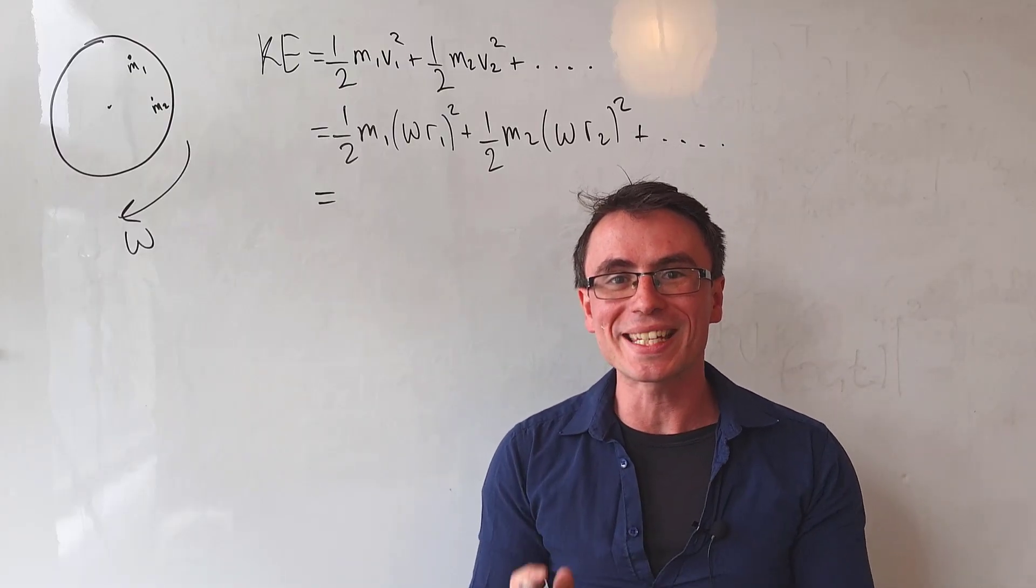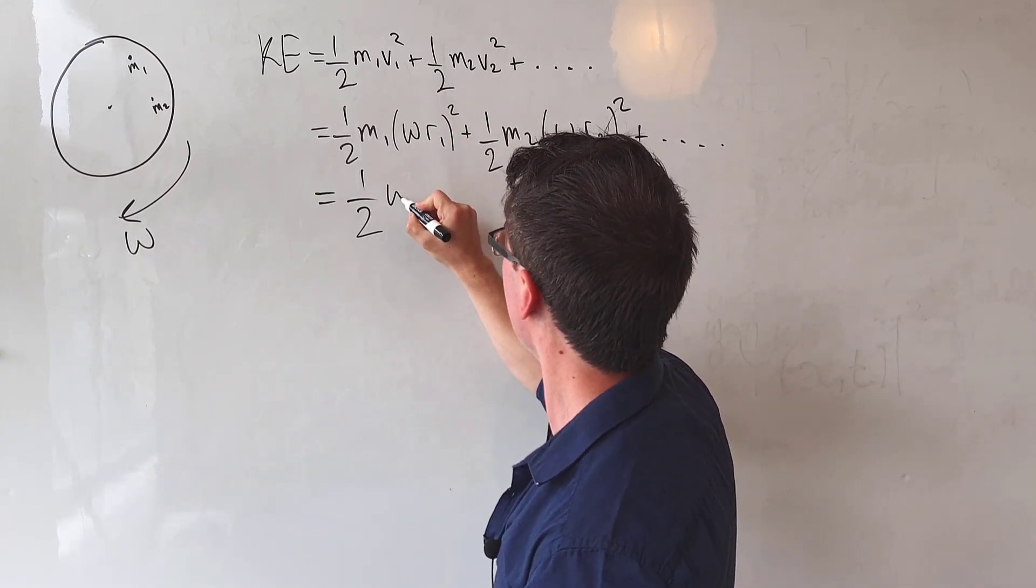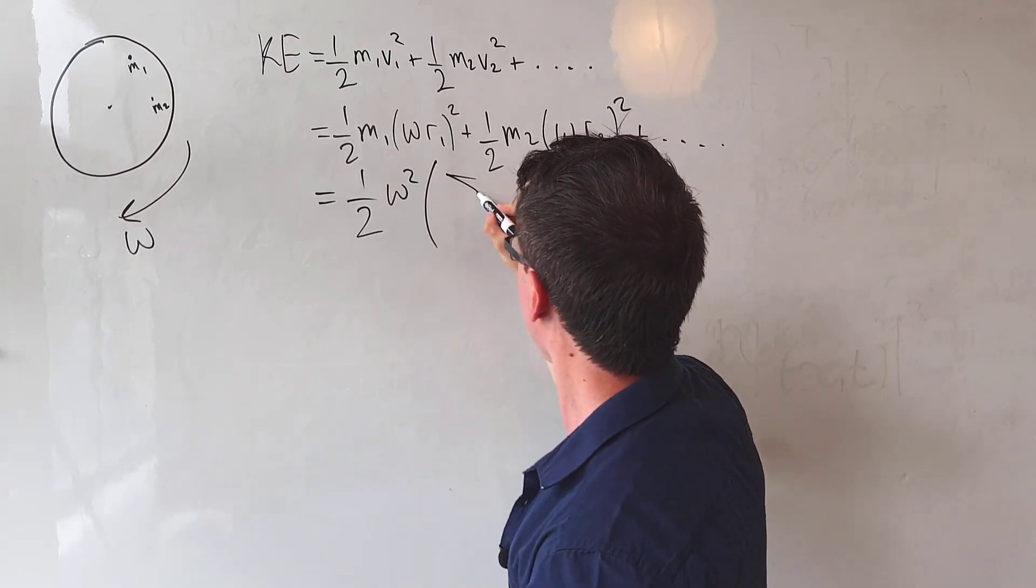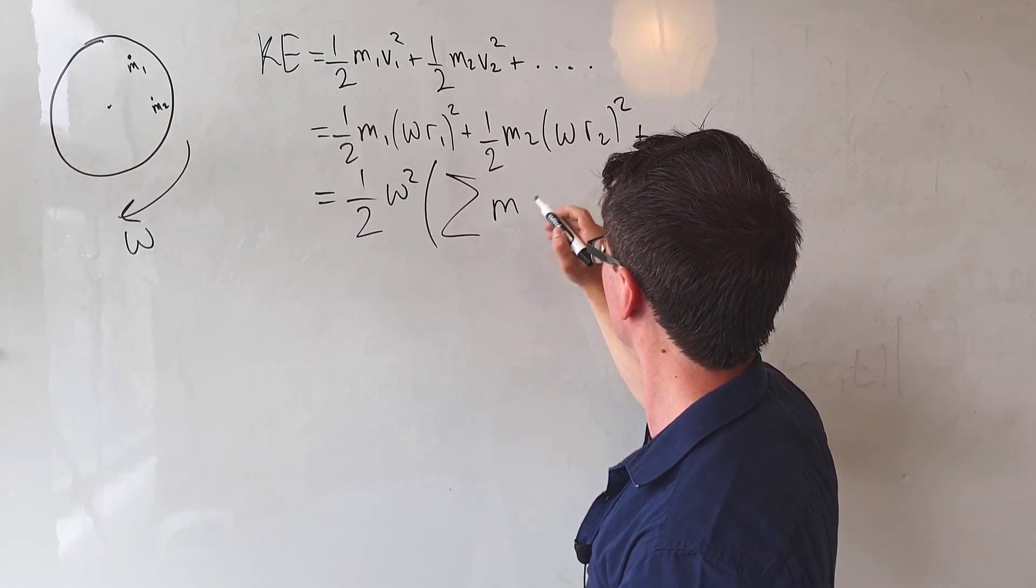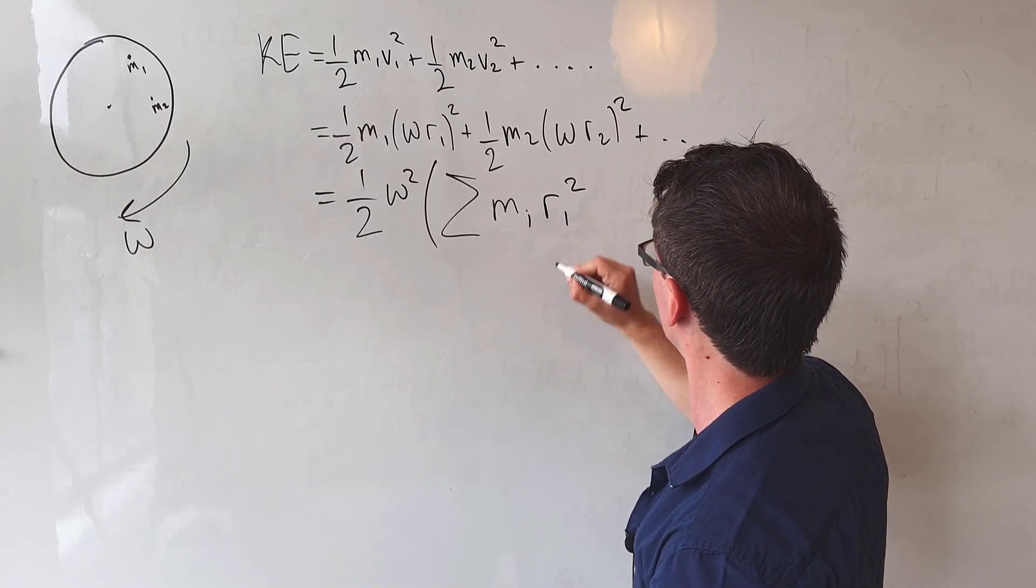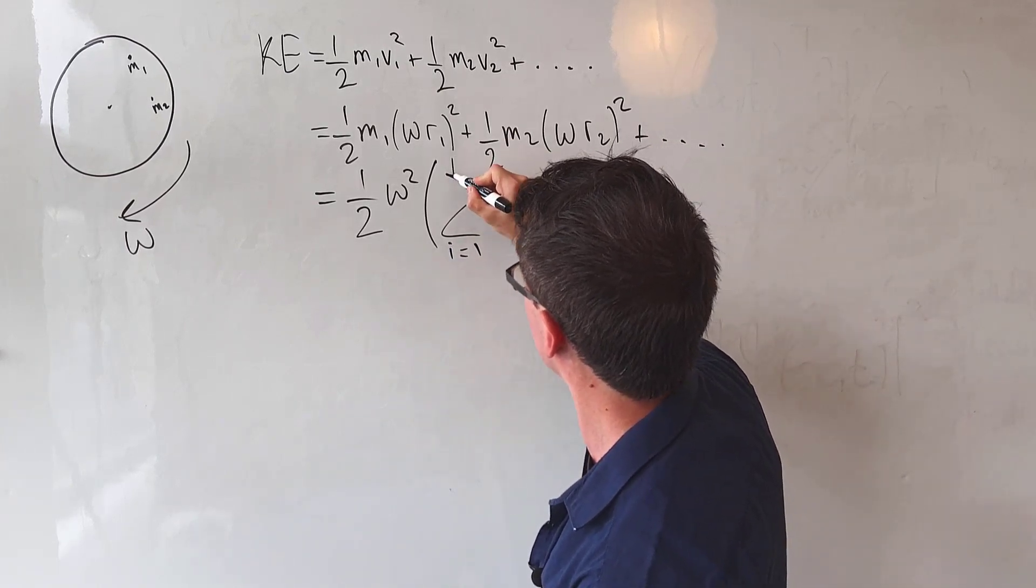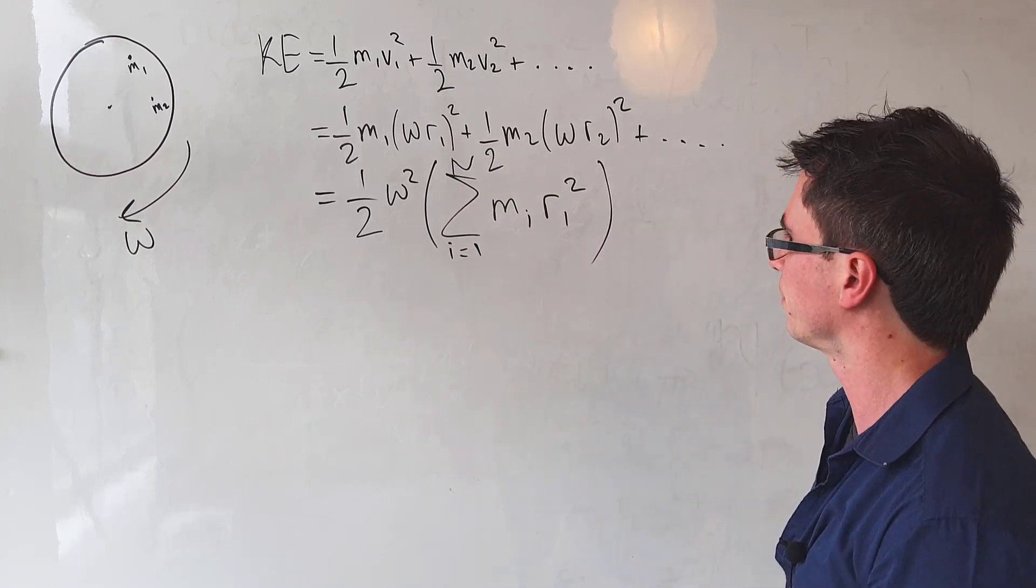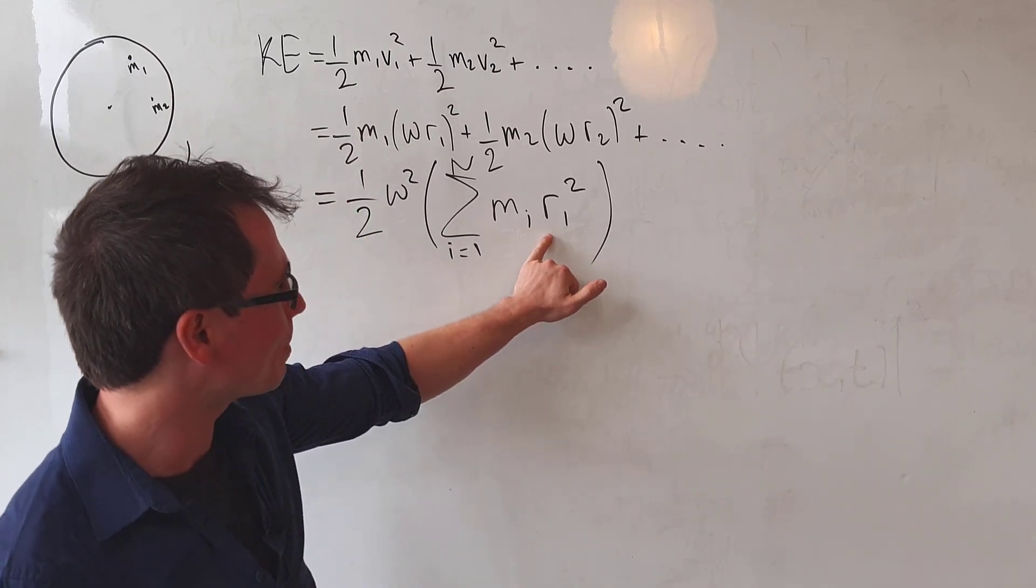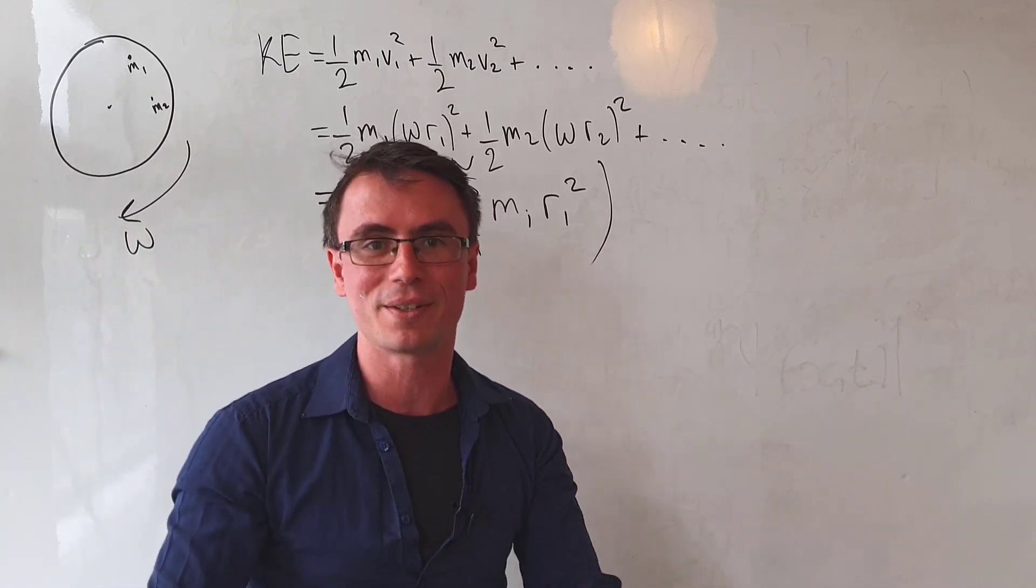All the points on the disc are rotating with the same angular velocity so we can take out a factor of a half omega squared. And what we're left with is a sum of all the particle masses, let's call that mi, multiplied by the radius squared, give it an index i. And this is a summation from i equals 1 to n particles. This quantity right here, the sum of all the individual masses multiplied by the radius squared, is equal to the moment of inertia.